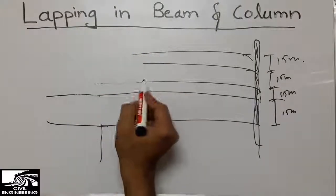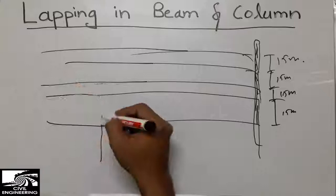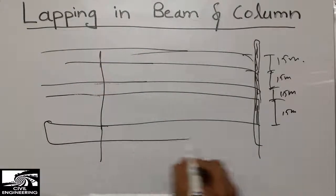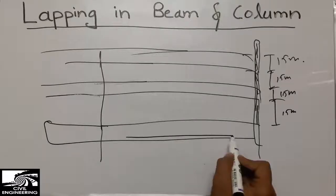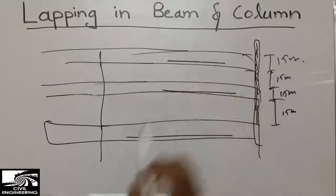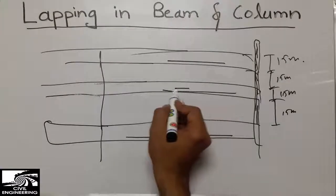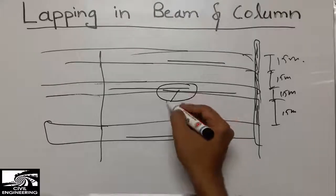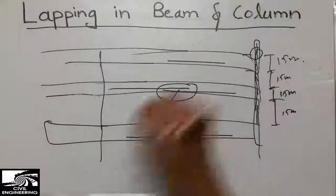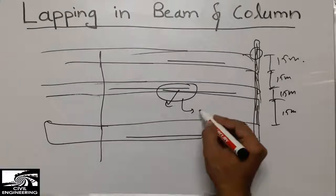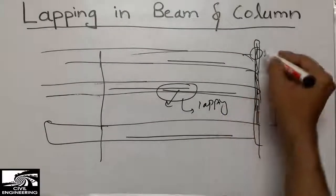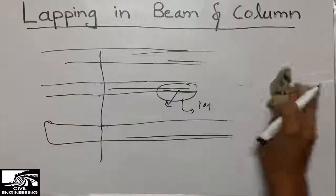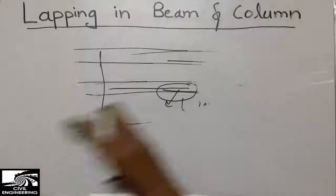These are the beams moving in the structure and these are the columns. The reinforcement in the beam is placed like this — we place one reinforcement bar and then another alongside it to continue and transfer the load. We do this overlapping in beams and also in columns. This is what we define as lapping in beams and lapping in columns.